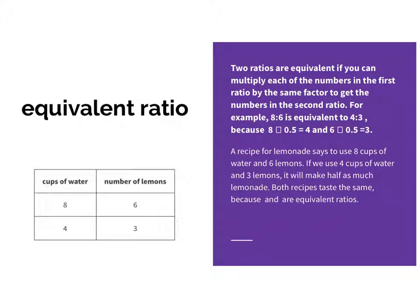One more time, an equivalent ratio. Two ratios are equivalent if you can multiply each of the numbers in the first ratio by the same factor to get the numbers in the second. For example, the ratio 8 to 6 is equivalent to 4 to 3. Let's just show that. 8 to 6, 4 to 3.